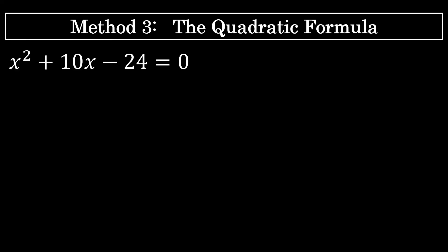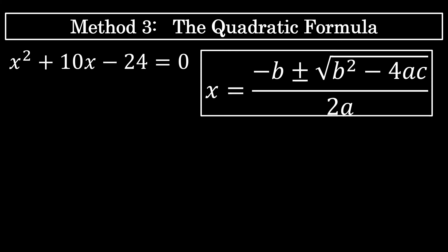Like the completing the square method, the quadratic formula can be used to solve any quadratic equation. The quadratic formula is derived by completing the square, and it is x equals negative b plus or minus the square root of b squared minus 4ac, all over 2a. Here, a is the coefficient on x squared, b is the linear coefficient — the coefficient on x — and c is the constant in the quadratic. Substituting a, b, and c into the quadratic formula will give you the two answers to any quadratic equation.